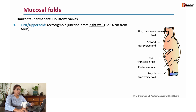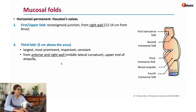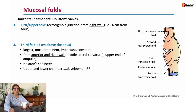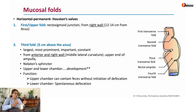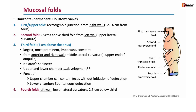The first and third Houston's valves come from the right. The first is present almost at the rectosigmoid junction, and the third is in the middle — it is the largest and most important of the valves, appearing from the anterior and right side. Sometimes it forms a complete circle of fold called the Nelaton sphincter. It divides the rectum developmentally: the part above is pre-allantoic hindgut, and the part below is post-allantoic hindgut. It functions as a chamber for holding fecal matter, supporting the column of feces without initiating defecation. If fecal matter passes into the lower chamber, there is spontaneous defecation. The second and fourth folds are 2.5 centimeters above and below the third Houston's valve.